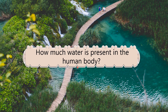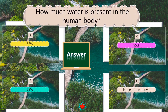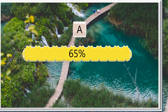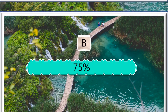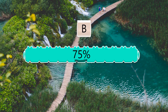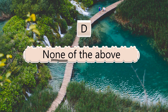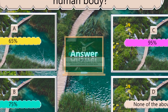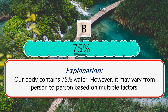How much water is present in the human body? The answer is 75%. Our body contains 75% water; however, it may vary from person to person based on multiple factors.